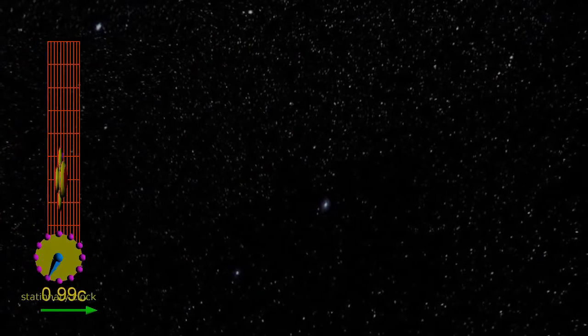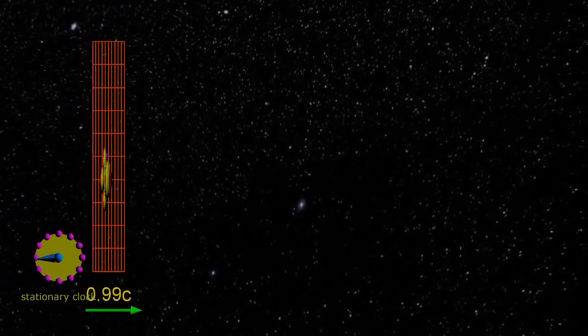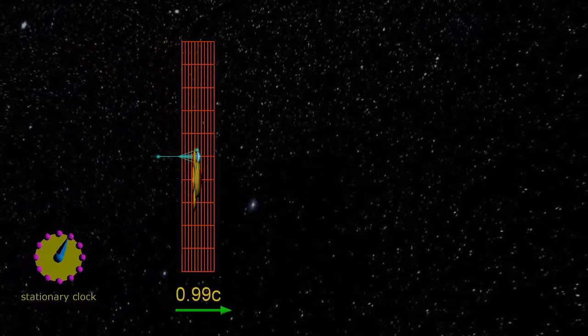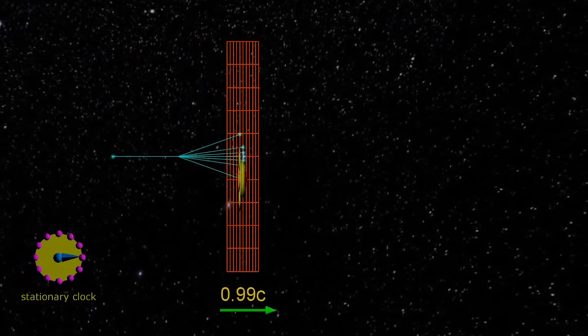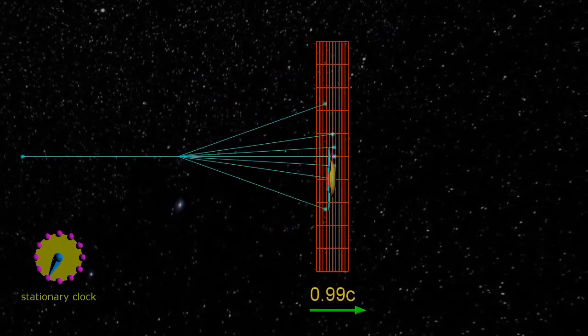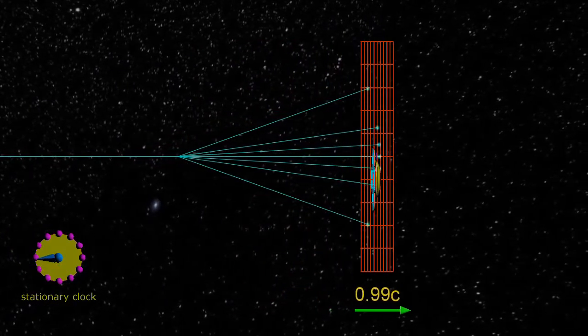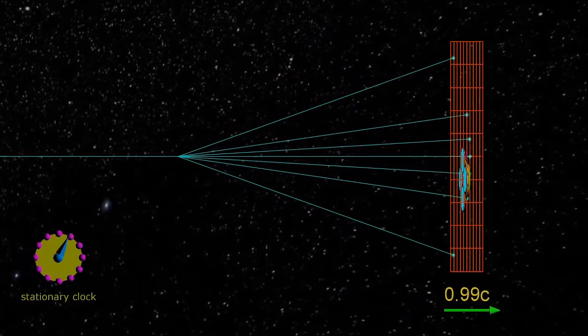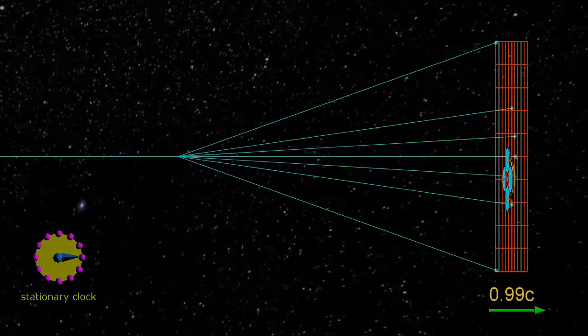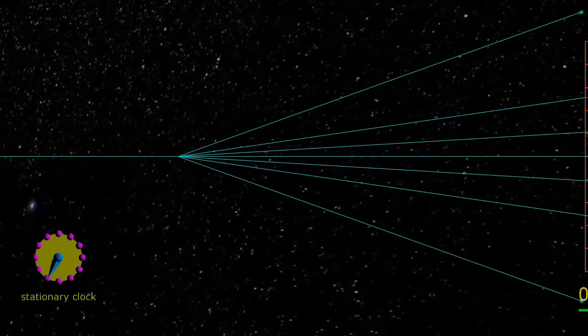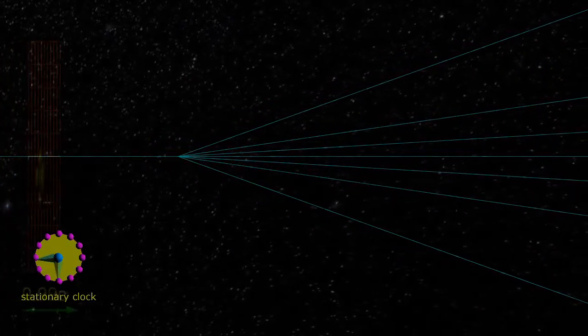At 0.99c, all the relativistic effects we have seen are more pronounced. I have removed the clocks because they cannot be read due to the length contraction. However, you can see that the left photon reaches the leftmost intersection very quickly, and the right photon takes a long time to reach its last intersection. The clocks have moved even further away from being synchronized.